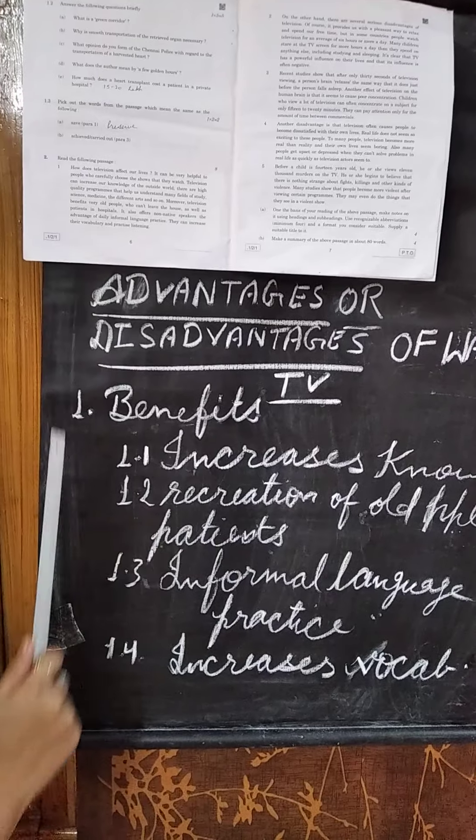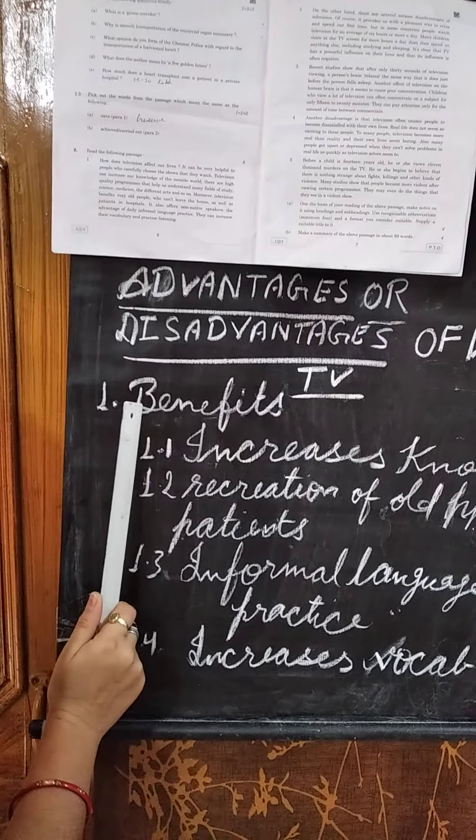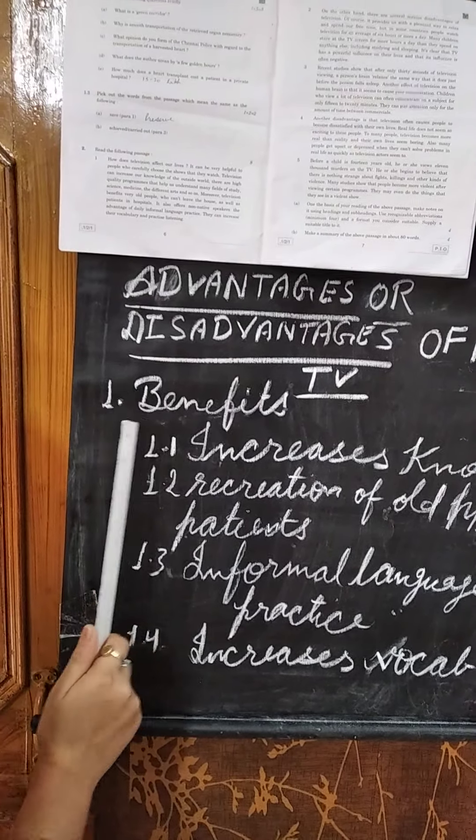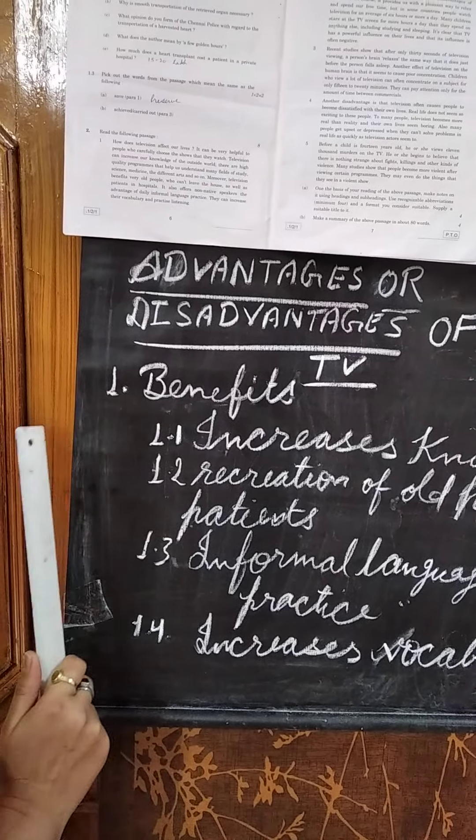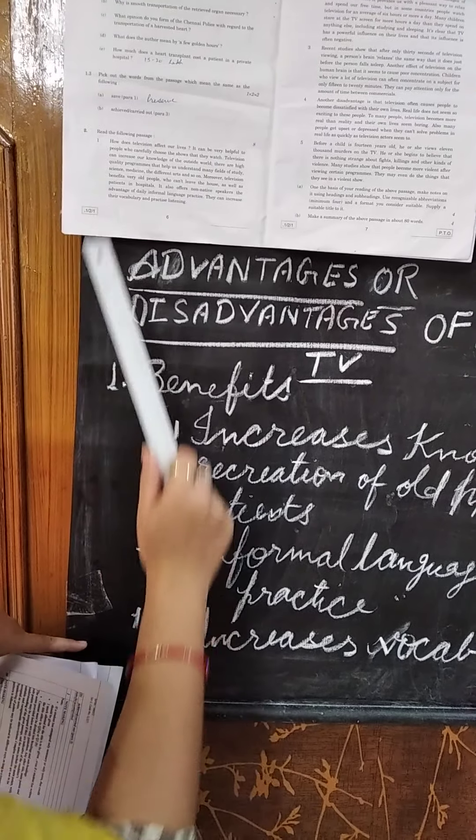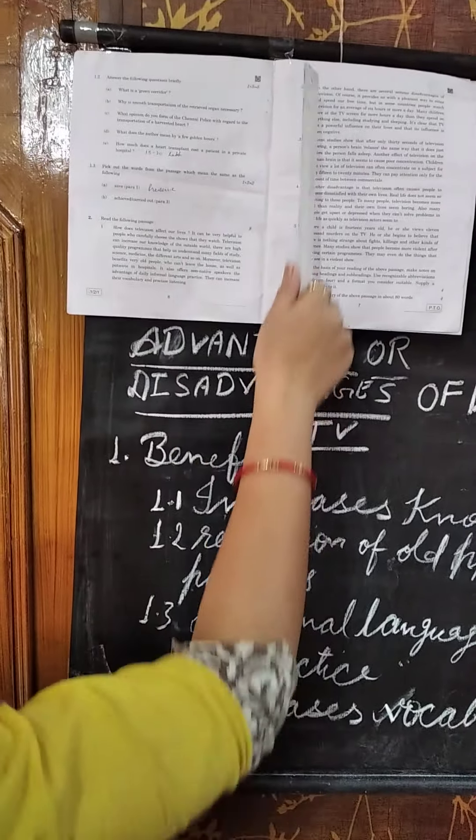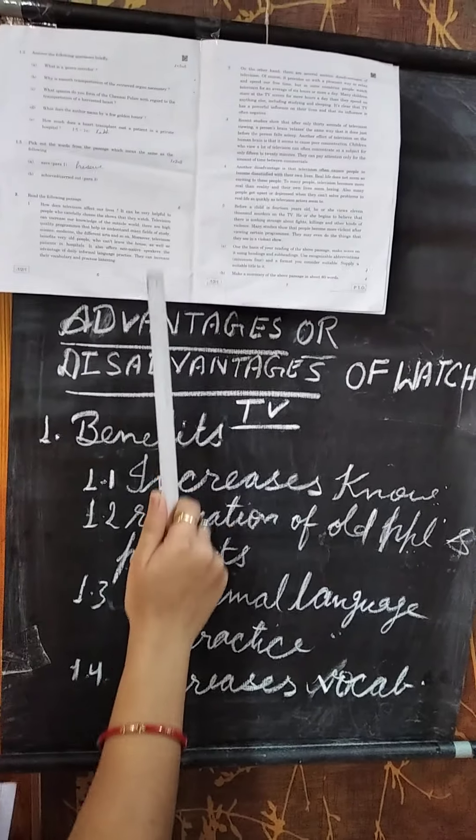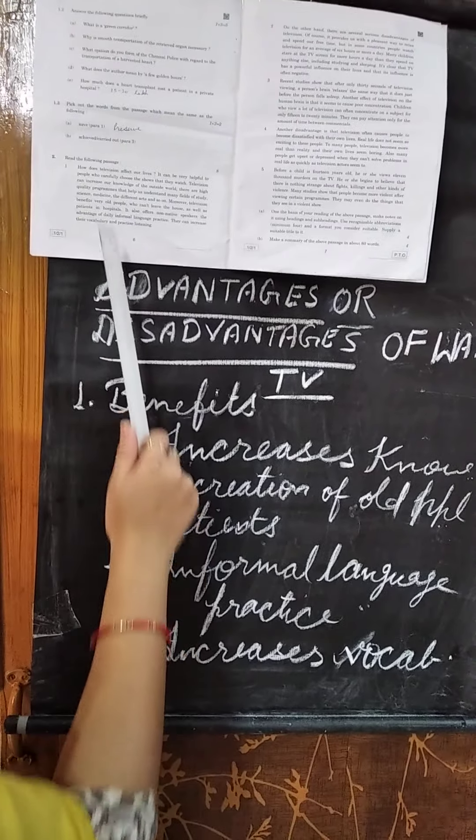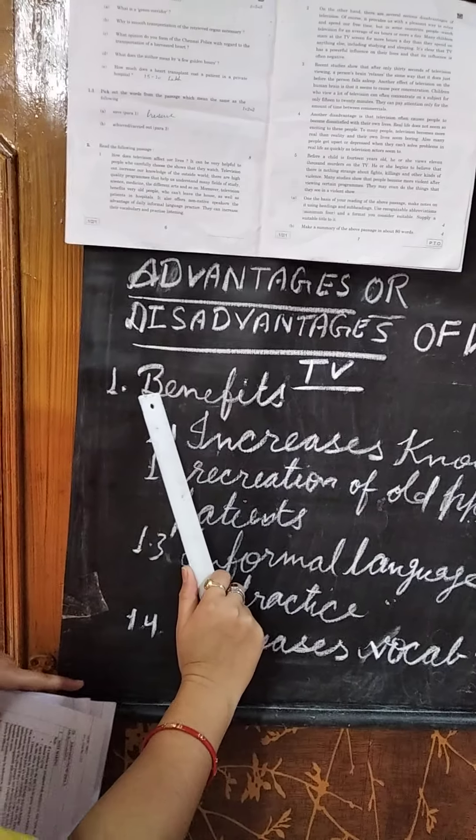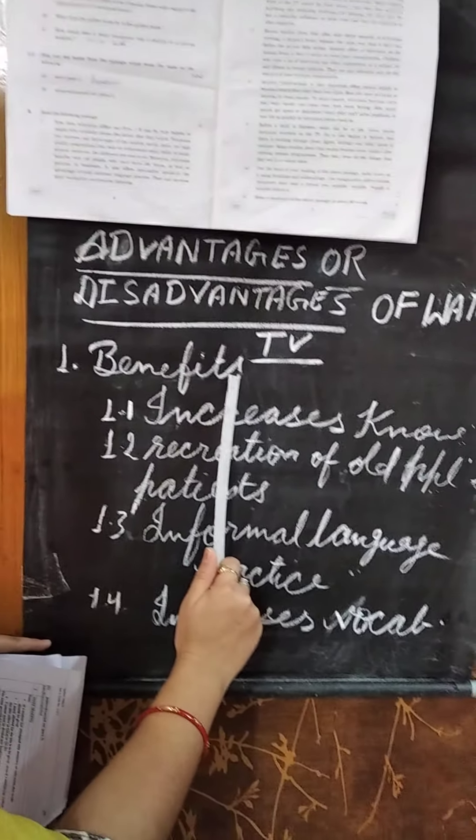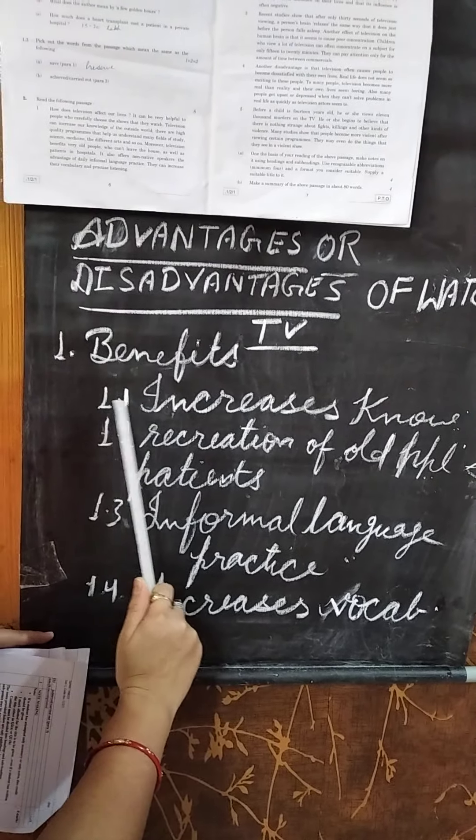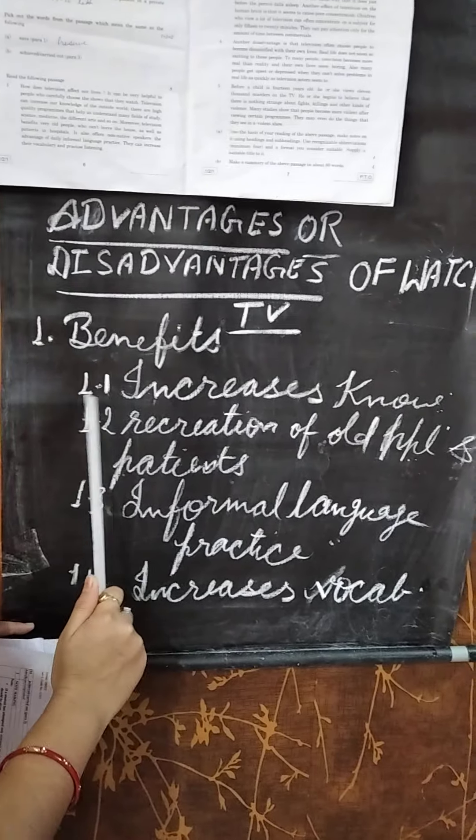Then as I told you that 3 headings, 3 sub headings should be there. So first when you read these paragraphs, you will take out a heading. The heading is written over here, benefits first of all. 1.1, this is the sub heading.